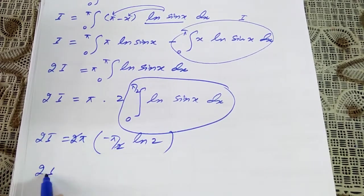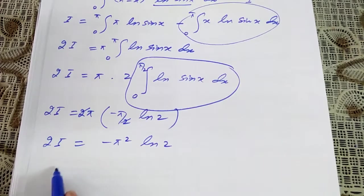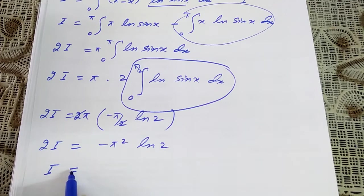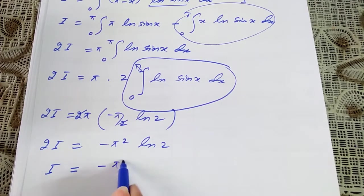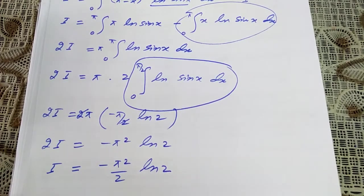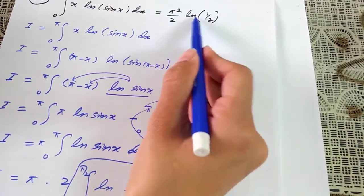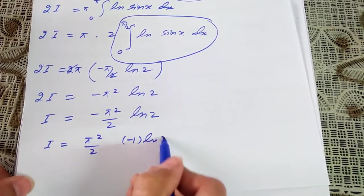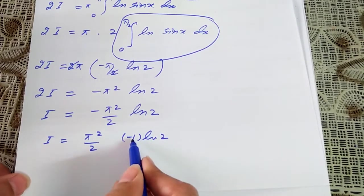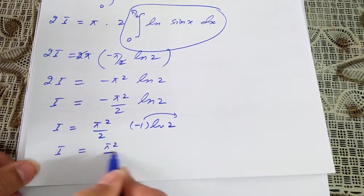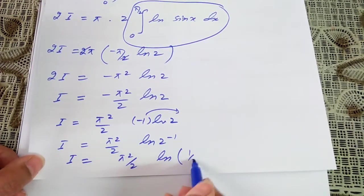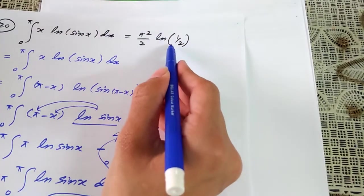Now in the question the answer is expressed as π²/2 times ln(1/2), but our result has ln 2. Using the property of logarithms, minus ln 2 equals ln(2 to the power minus 1) equals ln(1/2). So i equals π²/2 times ln(1/2). This matches the required answer exactly, so question 20 is proved.